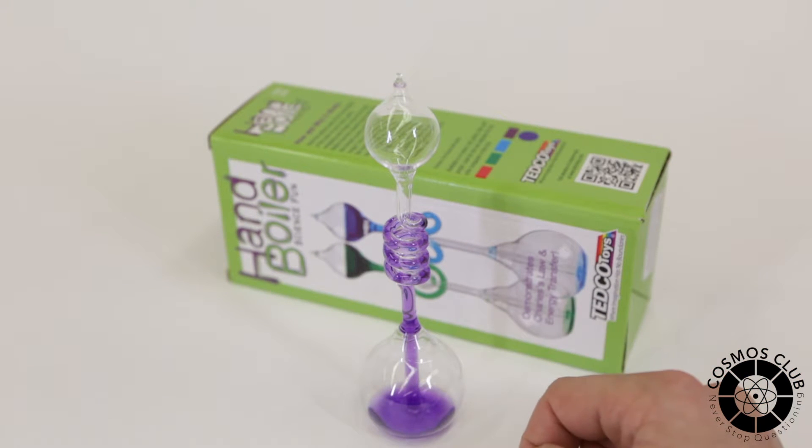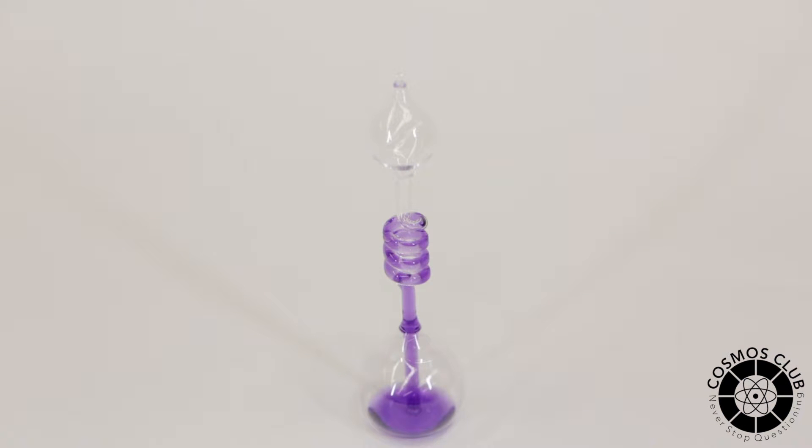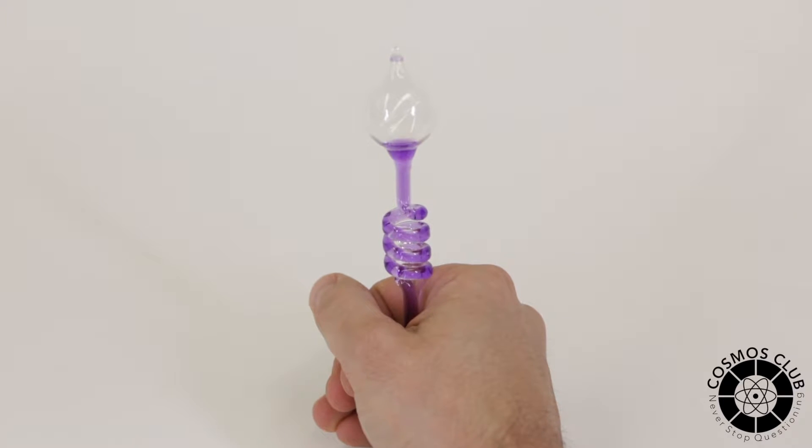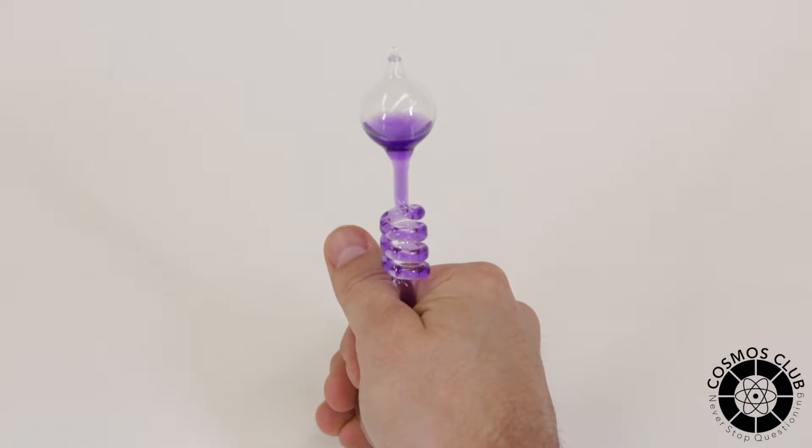All you need to do is grip the bottom bulb with your hand. You don't have to squeeze it very hard, you don't have to do anything, you just have to hold it in your hand. Now as you can see, that liquid inside is mysteriously rising. So what's going on here?